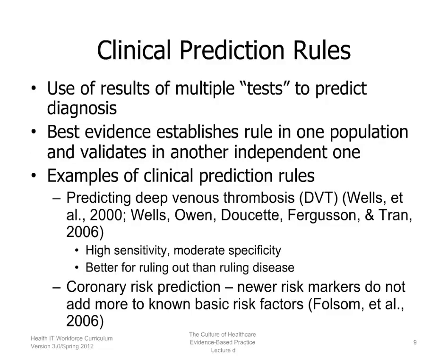We will finish this lecture with some discussion about clinical prediction rules. The idea behind clinical prediction rules is that we use results from multiple tests — including not only blood tests and x-rays but also the presence of certain clinical findings, signs, and symptoms — to predict the diagnosis. The best evidence for clinical prediction rules will establish the rule in one population and then validate it in another independent one.